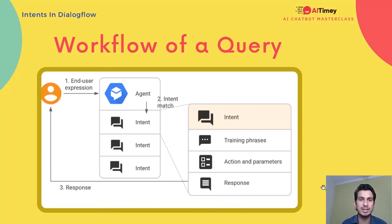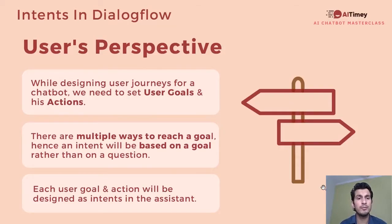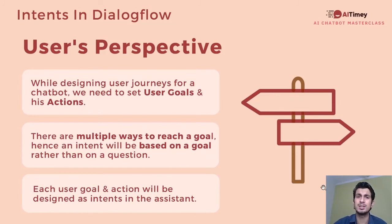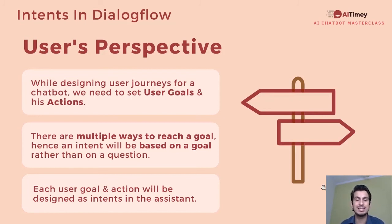Now here comes the catch — how do we find the right intent? We need to understand how we are actually configuring these intents and matching the user expression with the right intent. While designing user journeys for a chatbot, we need to set user goals and their actions. There are multiple ways to reach a particular goal, so an intent will mostly be based on a goal rather than just a single question. User goals and user actions will be designed as intents in the assistant.